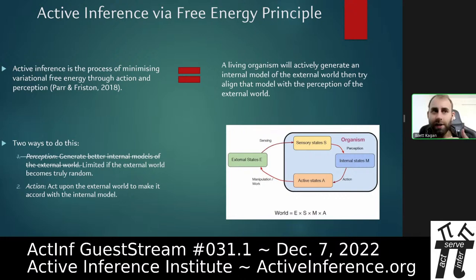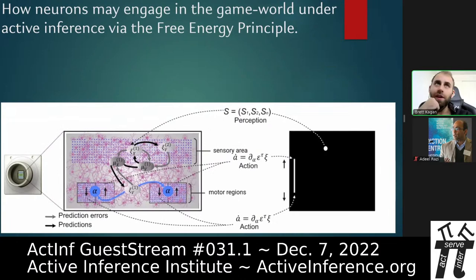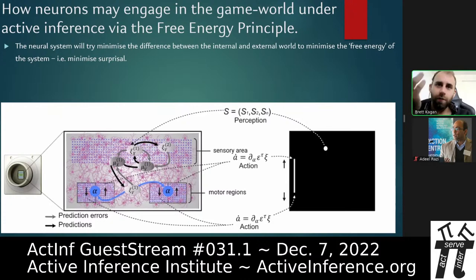For our cell cultures, we simply removed one of those options. If the world became truly random — which is approximable in a dish with random noise — then following active inference, what the cells will do is change their actions to accord with the internal model they derive from the sensory stimulation we feed them. The neural cells or system will try to minimize the difference between internal and external world — i.e., minimize their surprisal.